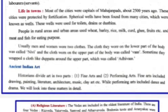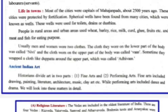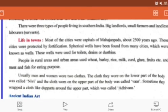Usually, men and women wore two clothes. The cloth worn on the lower part of the body was called nevi, and the cloth on the upper part was called vas. Sometimes they wrapped a cloth like a dupatta around the upper part, which was called adivas. This was about the town and village life of ancient India. Have a great day. Thank you.